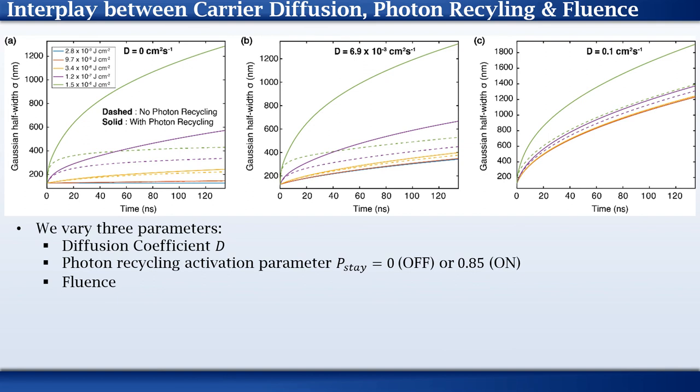We have studied the effect of varying diffusion, fluence, and photon recycling on our simulation. The panels are ordered left to right by increasing diffusion coefficient. In each panel, there are two sets of lines with colors matching different fluences which are shown in the legend. The dotted set is for p_state equals zero, or when photon recycling is absent, whereas the solid set of lines correspond to photon recycling being turned on.